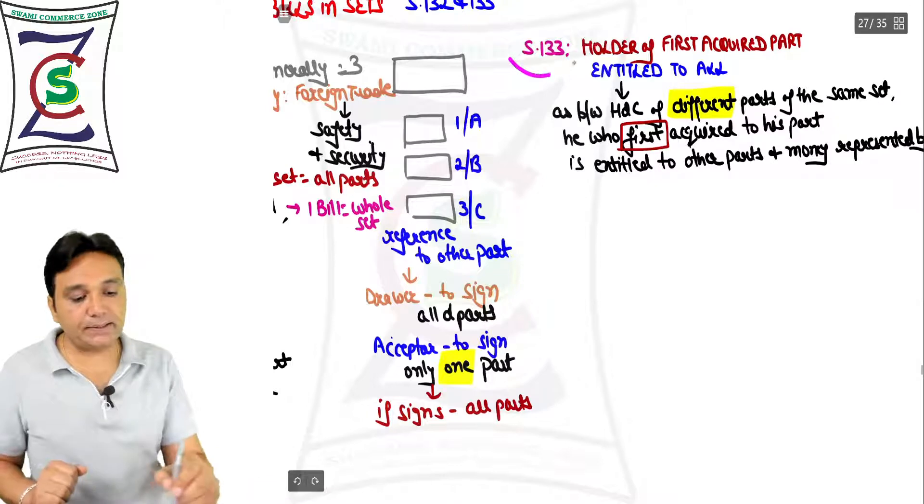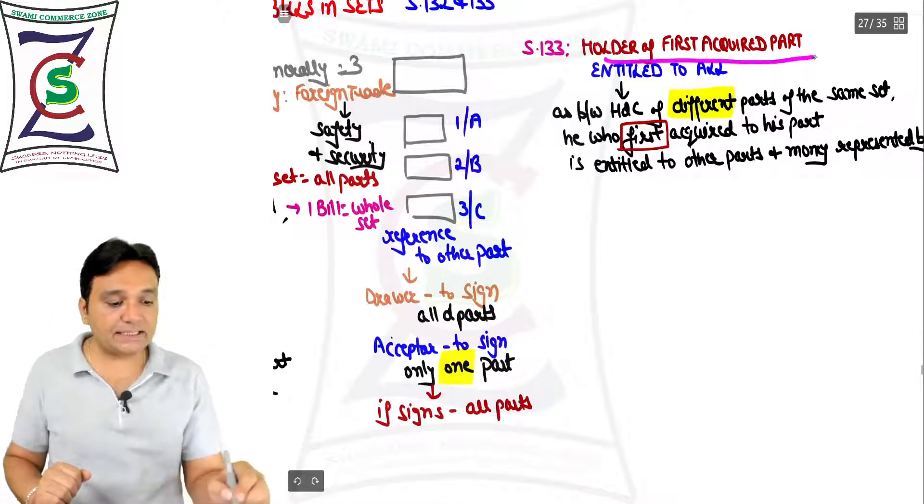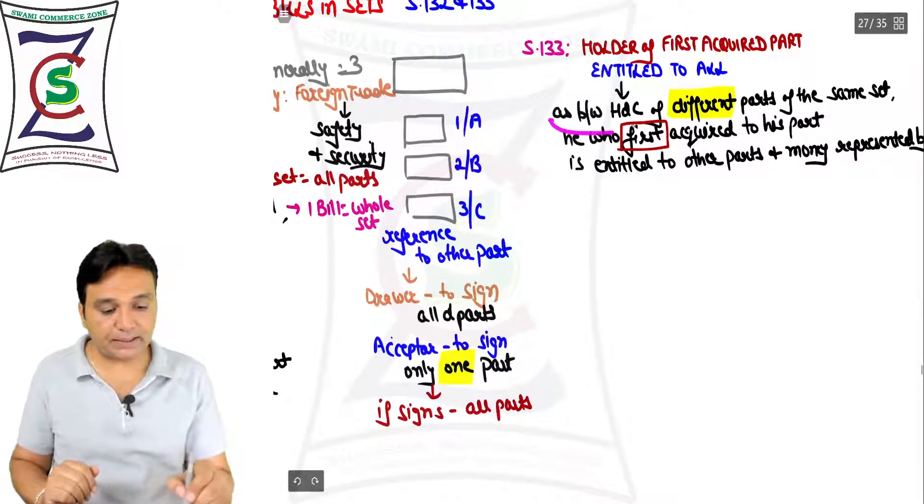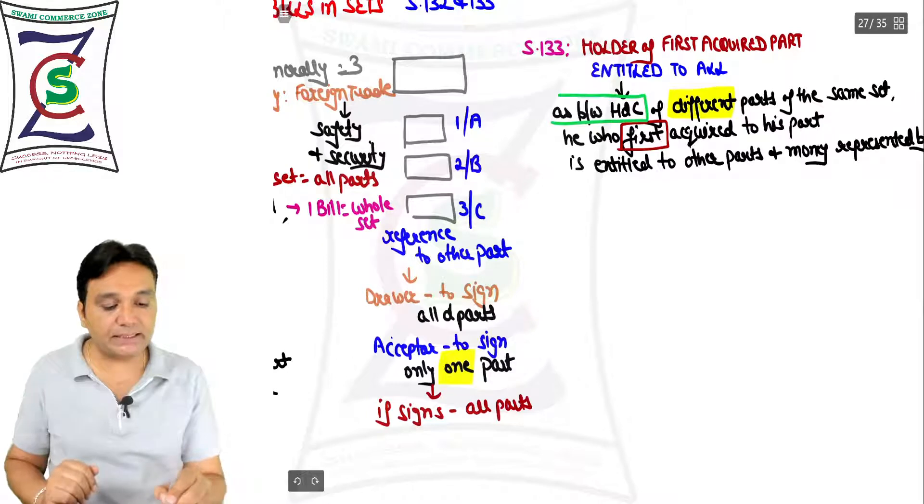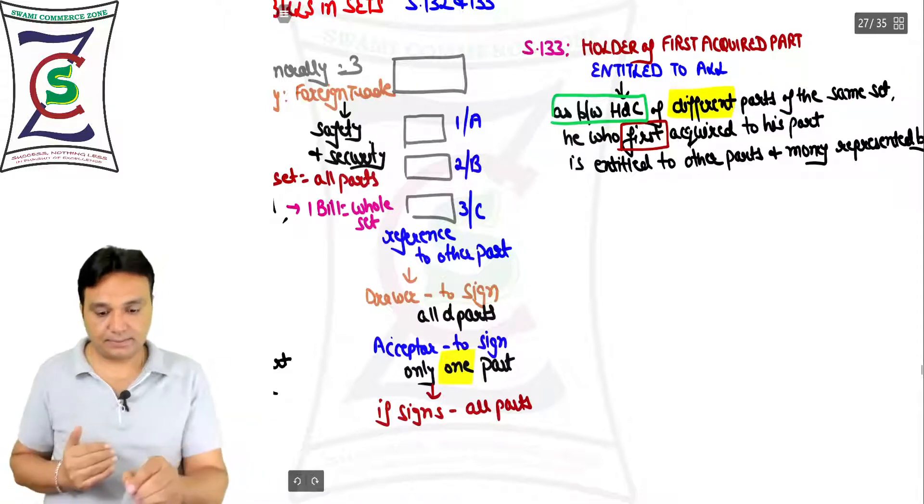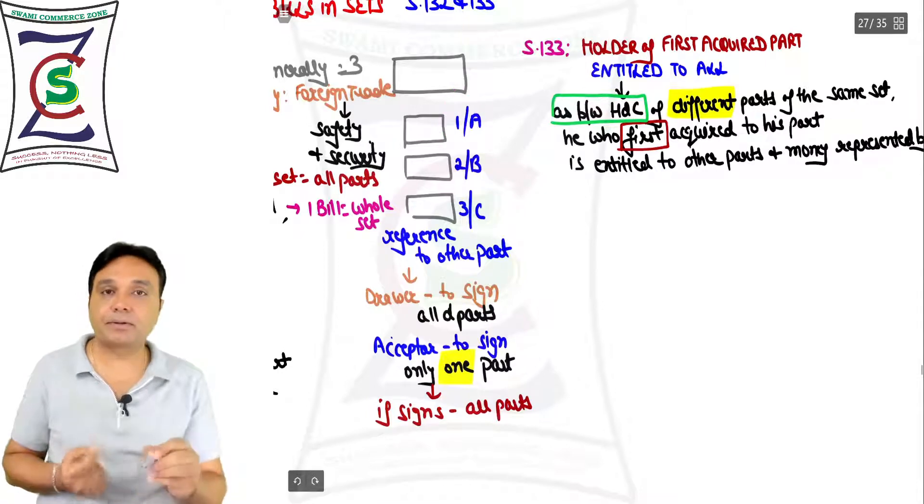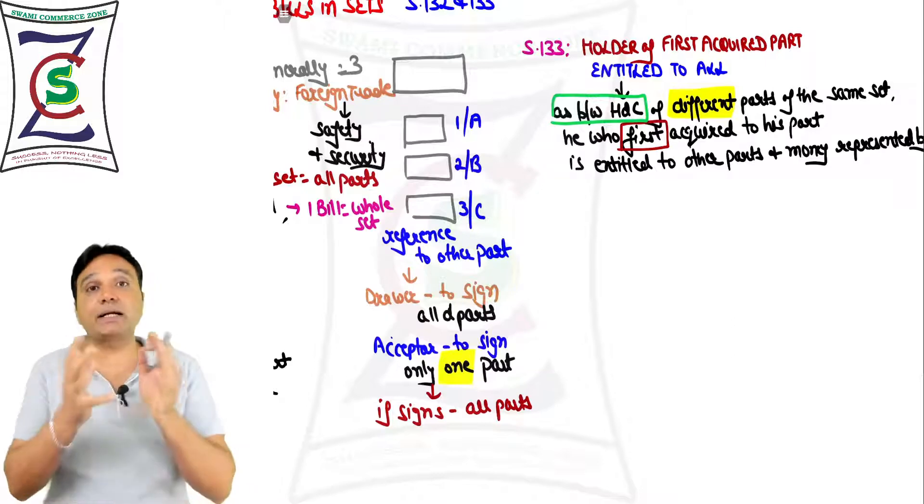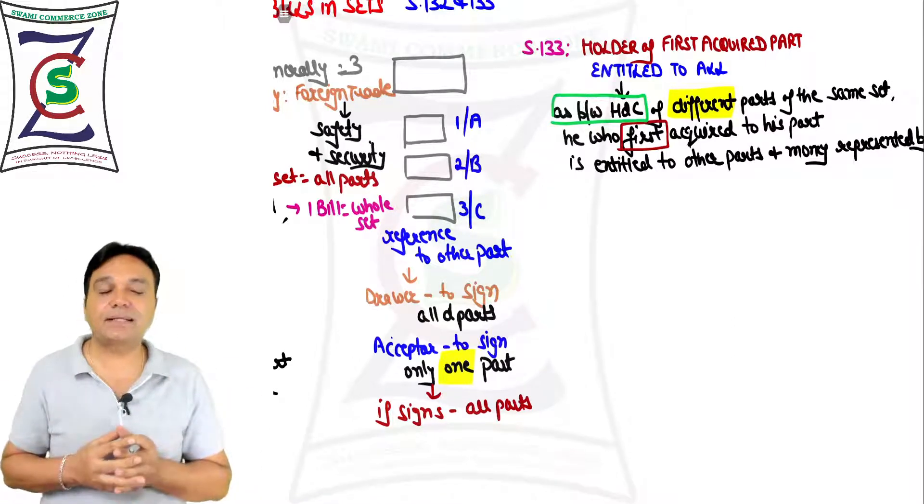Who satisfied six conditions: possession, entitlement, consideration, complete before maturity, in good faith, without knowledge of any defect, etc. Section 133 says holder of first acquired part entitled to all. As between HDC of different parts of the same set - let's say part number one is with Mr. A, he is HDC; B, C - all three are HDC. Who will get the payment? It's just like one kid and there are three fathers - that's not a good idea, man.